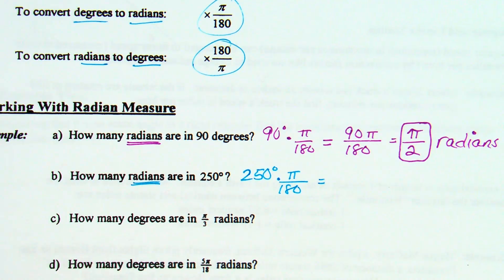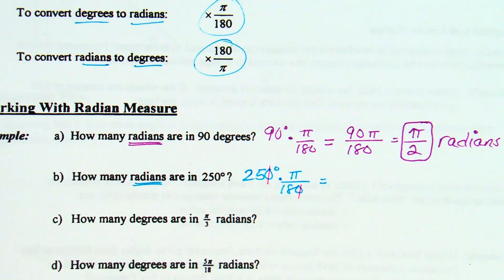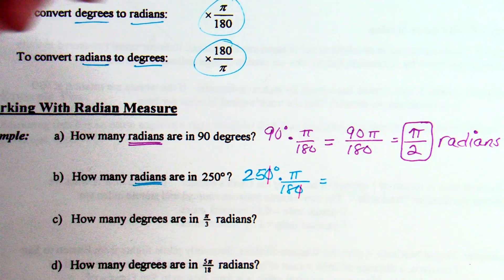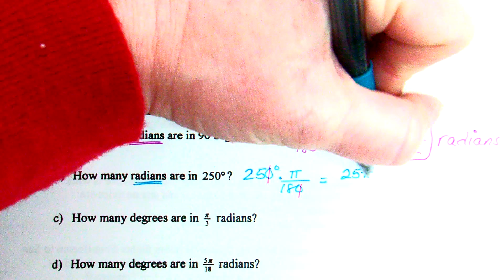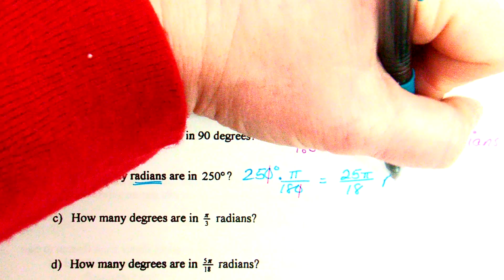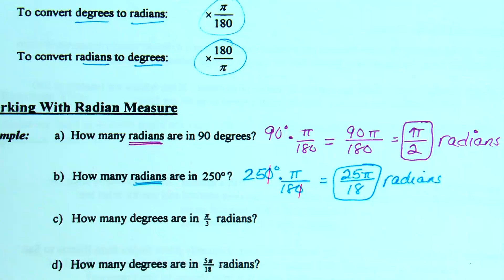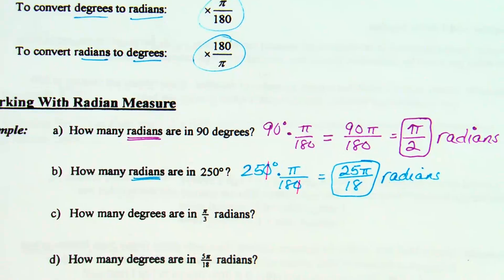Think about the fraction 250 over 180. What can I do already? The zeros. Are you guys okay if I say the zeros cancel? Because you're dividing both by 10, right? Just a fraction trick. The zeros are going to cancel because you're dividing both by 10. And so then what do I have? 25 pi over 18. Does it reduce past that? No, 25 and 18 have nothing in common. So this is 25 pi over 18 radians.